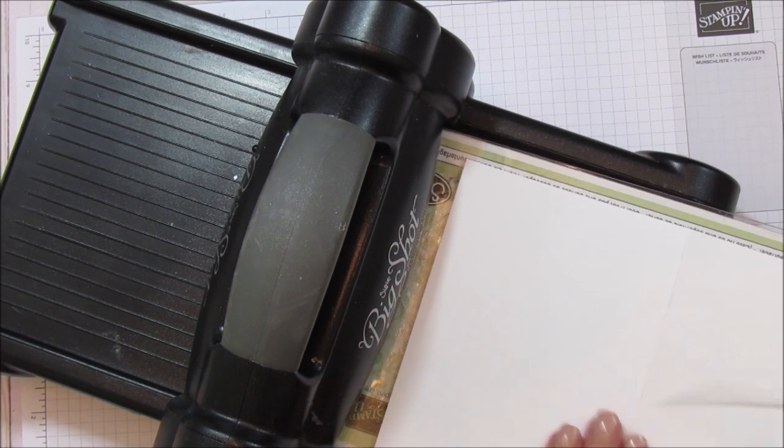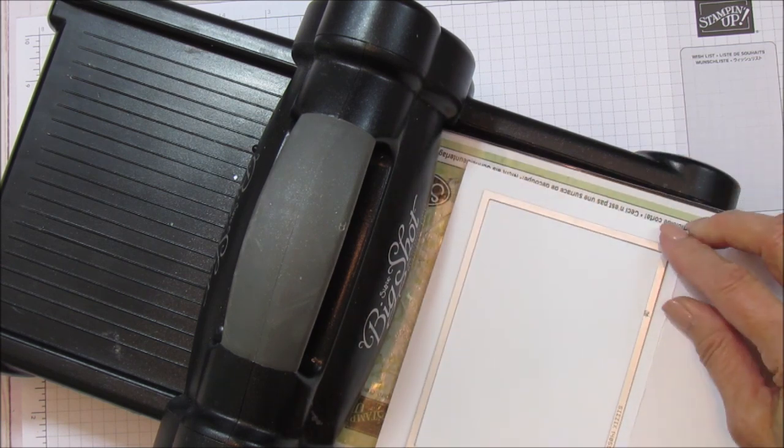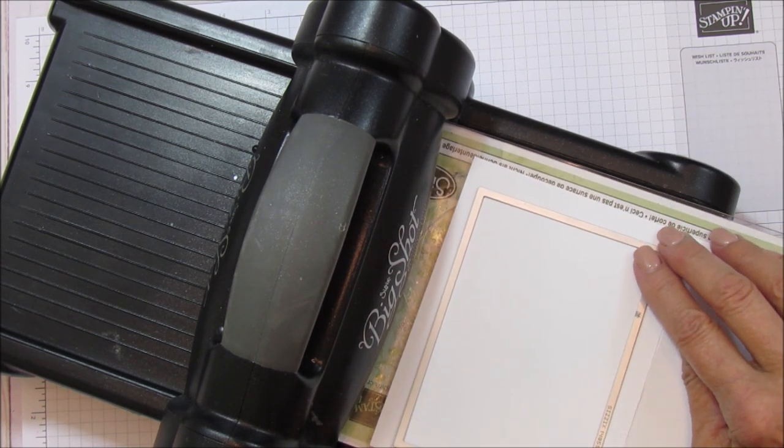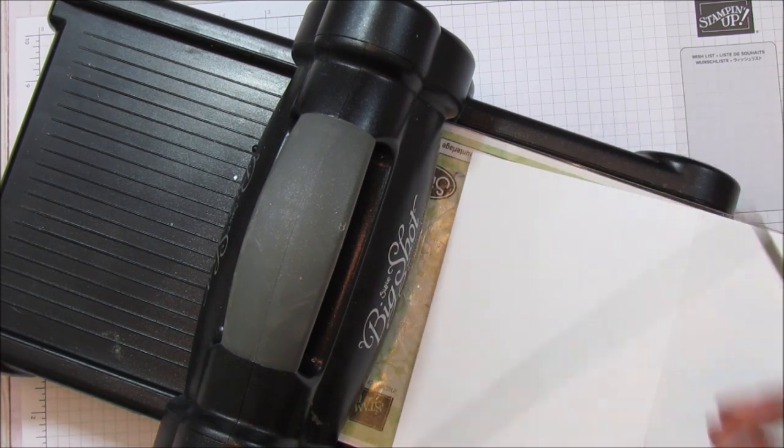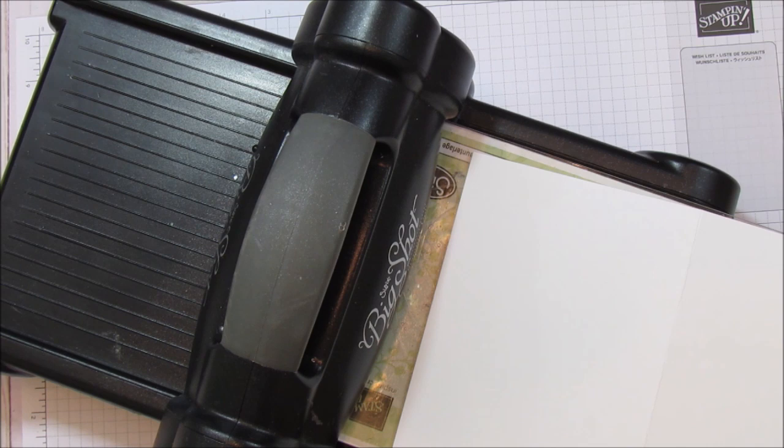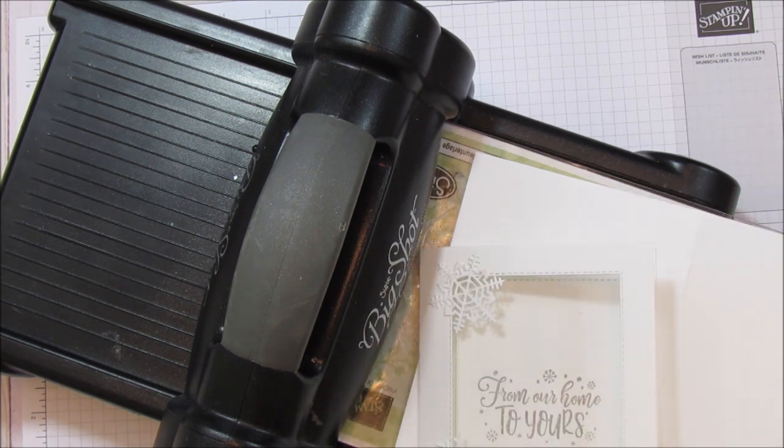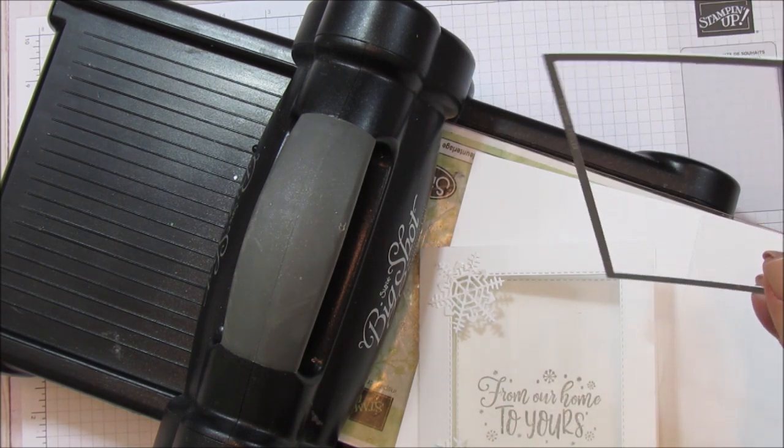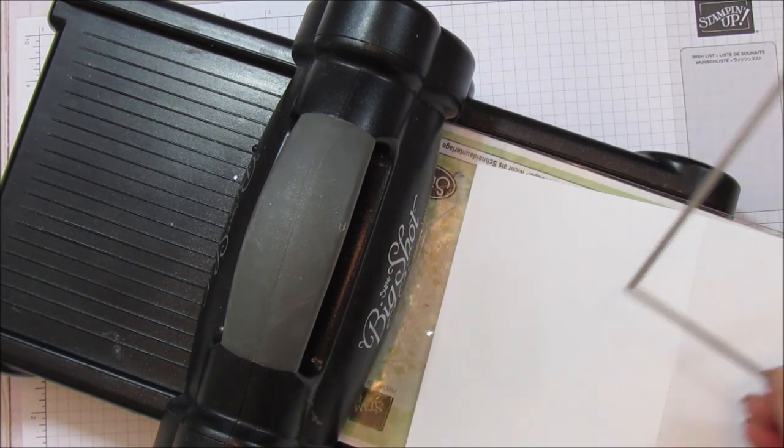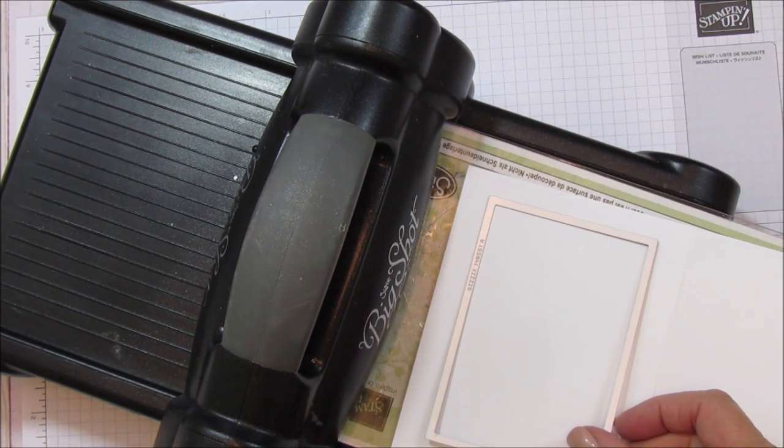We're going to put our platform down and bring in our card and we are going to cut out our window with this. Now I recommend making sure—I want to make sure I have the right one here because I did pull out two of these. This is the bigger one so we're going to use the next one smaller.